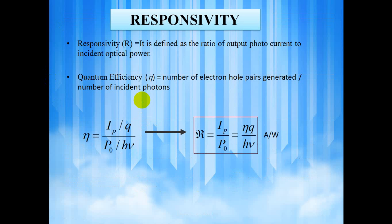Responsivity can be defined as the ratio of output photocurrent incident to the optical power. Quantum efficiency can be defined as the number of electron hole pairs generated by the number of incident photons, which is given by Ip by Q divided by P-naught by H-nu, where Ip is the incident photocurrent, Q is the charge of an electron, P-naught is the incident optical power, H-nu is the energy of a photon. Responsivity equals to Ip by P-naught which is equals to Eta Q by H-nu, whose unit is ampere per watt.